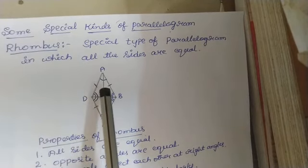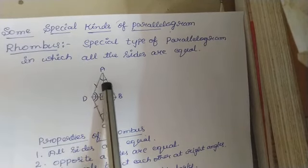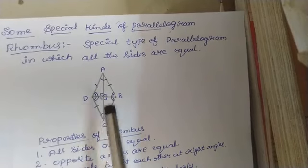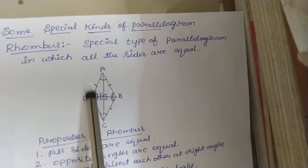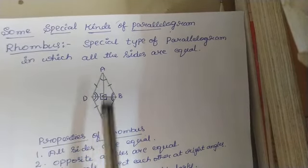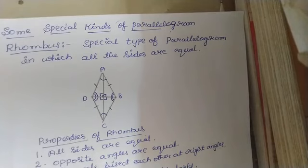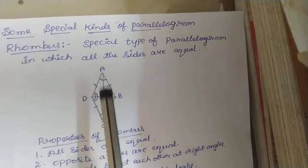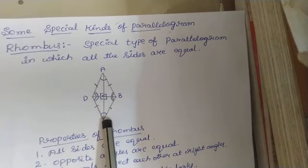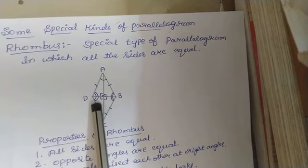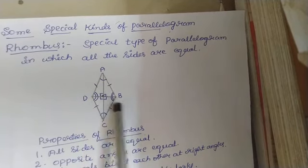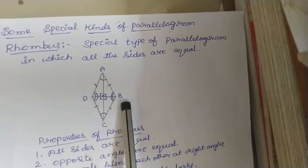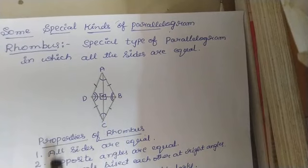Here in this figure, AB, BC, CD, and DA — all the four sides are equal. Then, opposite angles are equal: angle A is equal to angle C, both are opposite to each other. Angle D is equal to angle B, they are also opposite to each other.